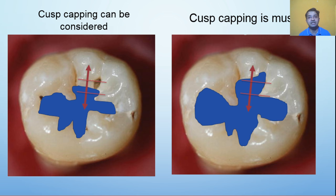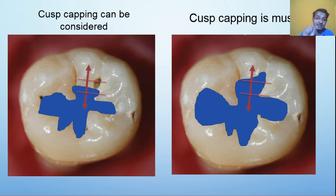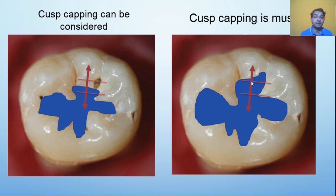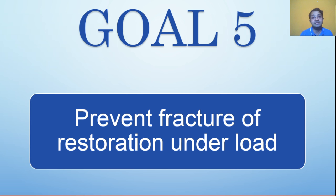Cusp capping can be considered if half or more than half but less than two-thirds of the distance between the cusp tip and the primary groove is crossed. If it crosses more than two-thirds, then cusp capping must be done regardless of whether the cusp is functional or non-functional.